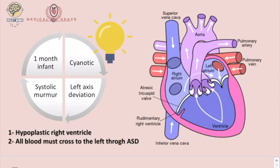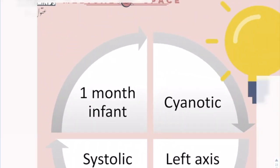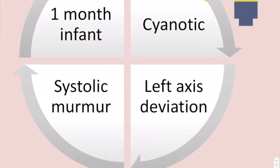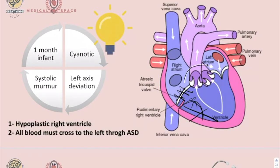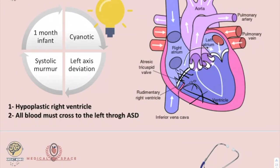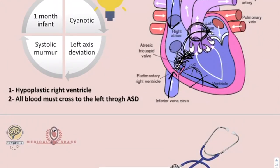In Tricuspid Atresia, there is an atretic tricuspid valve and a hypoplastic right ventricle. Because blood cannot flow into the right ventricle, it becomes hypoplastic and non-functional. Think of a one-month-old cyanotic infant with systolic murmur and left axis deviation. All blood must cross to the left through an atrial septal defect. Without an ASD, blood from the vena cavae would have no path forward; therefore, these patients must have an ASD. Some also have a VSD so blood can reach the pulmonary arch.